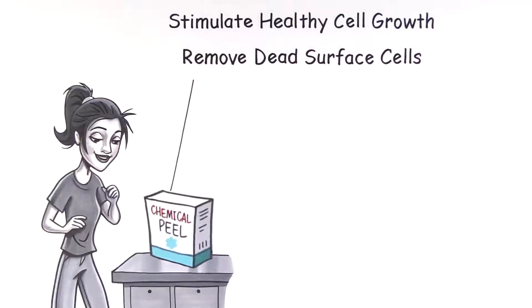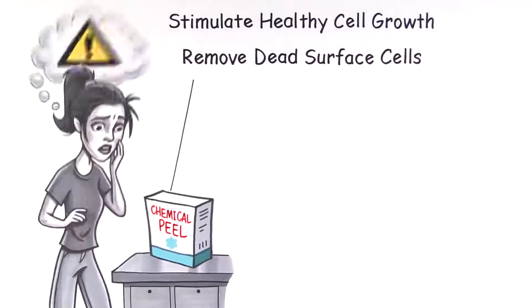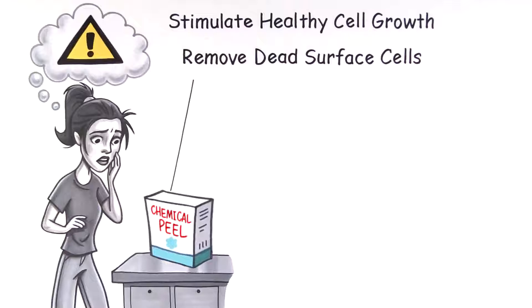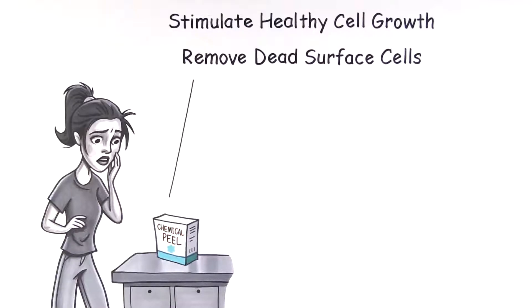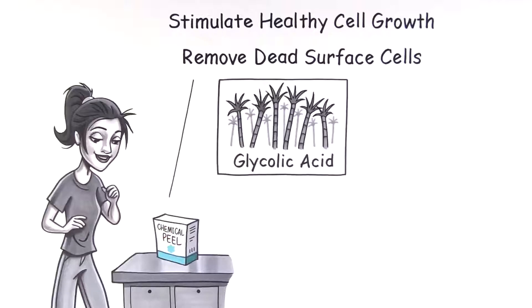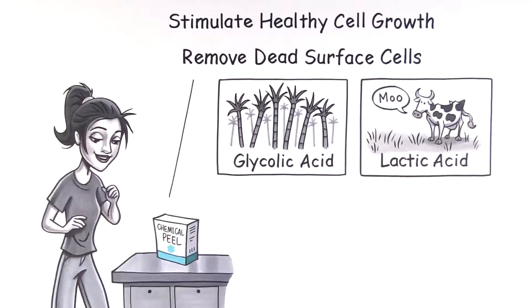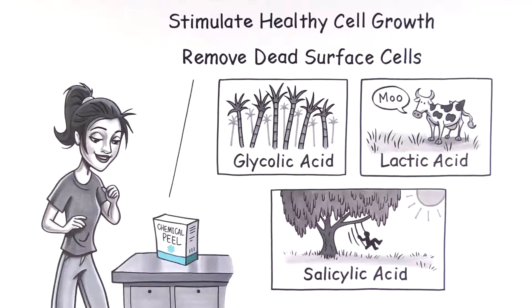The word chemical or acid can sound scary, but not all chemicals are the same. In fact, the active chemical in most peels is naturally derived. Glycolic acid comes from sugar cane, lactic acid comes from milk, and salicylic acid is from willow bark.